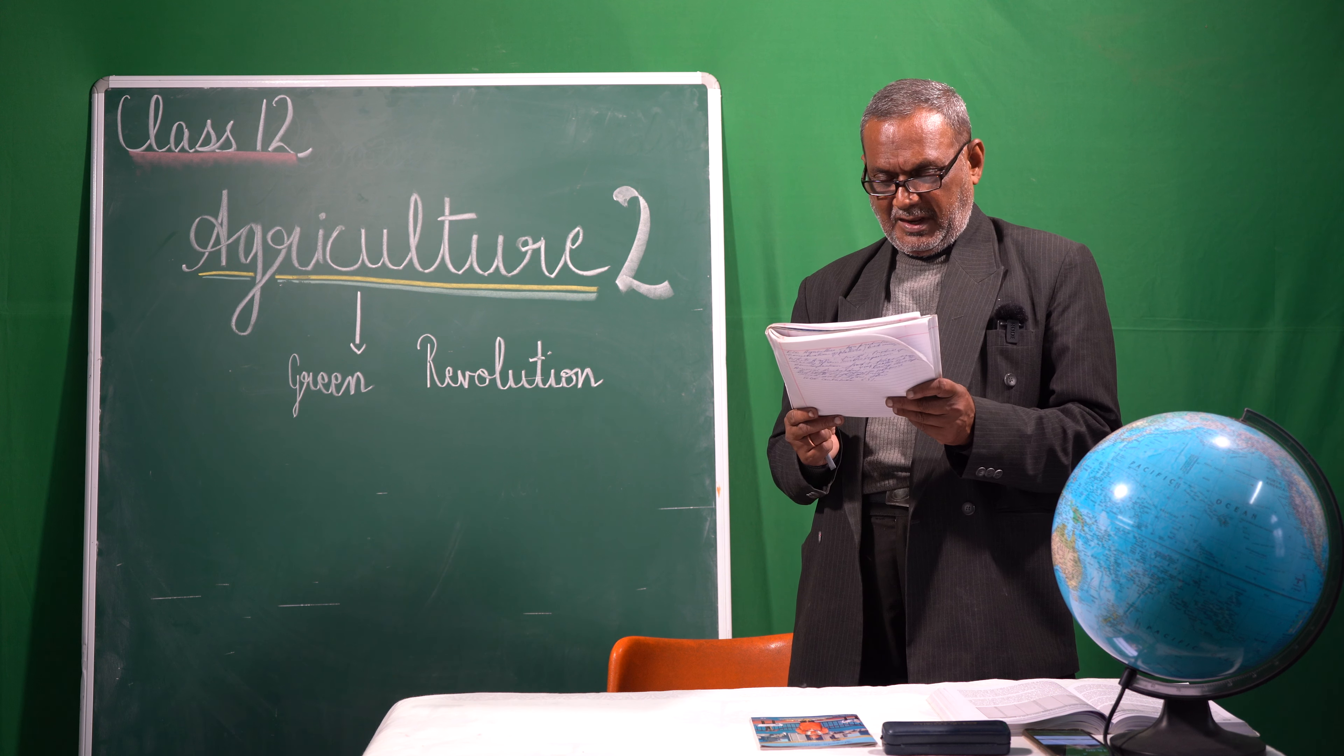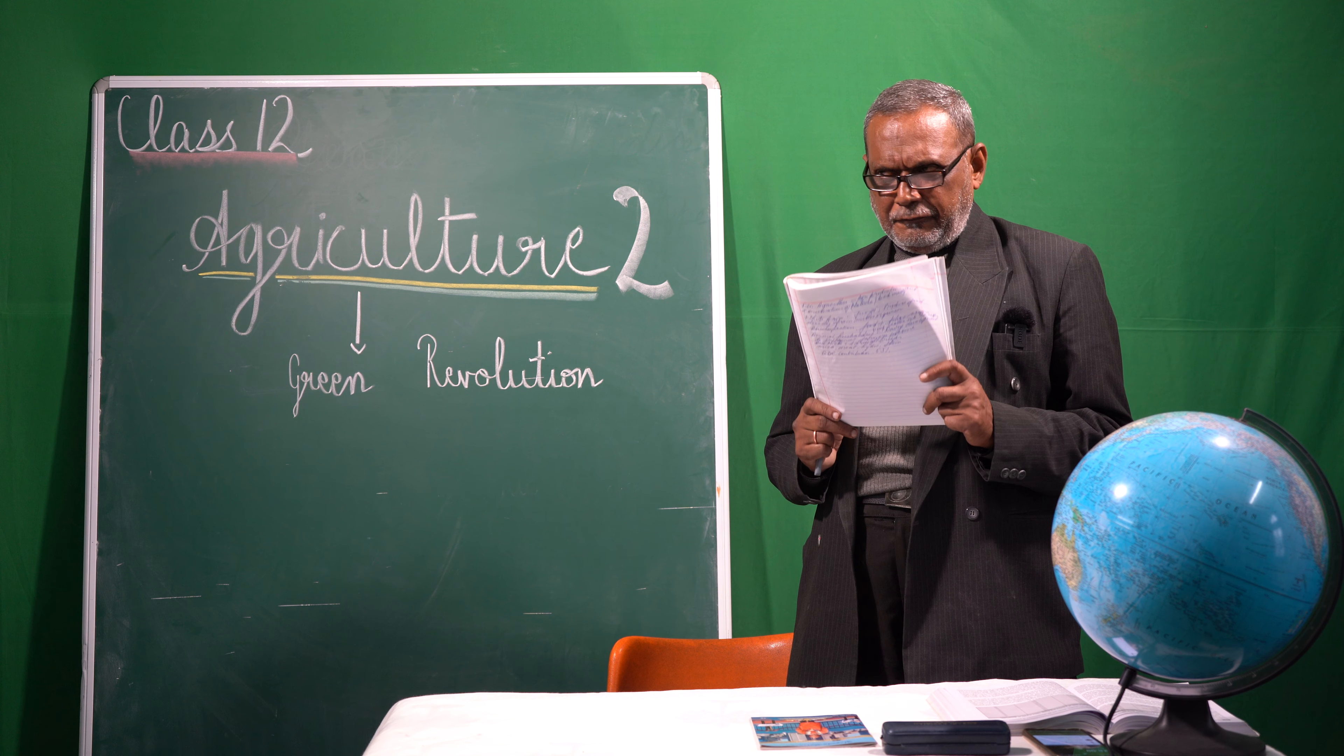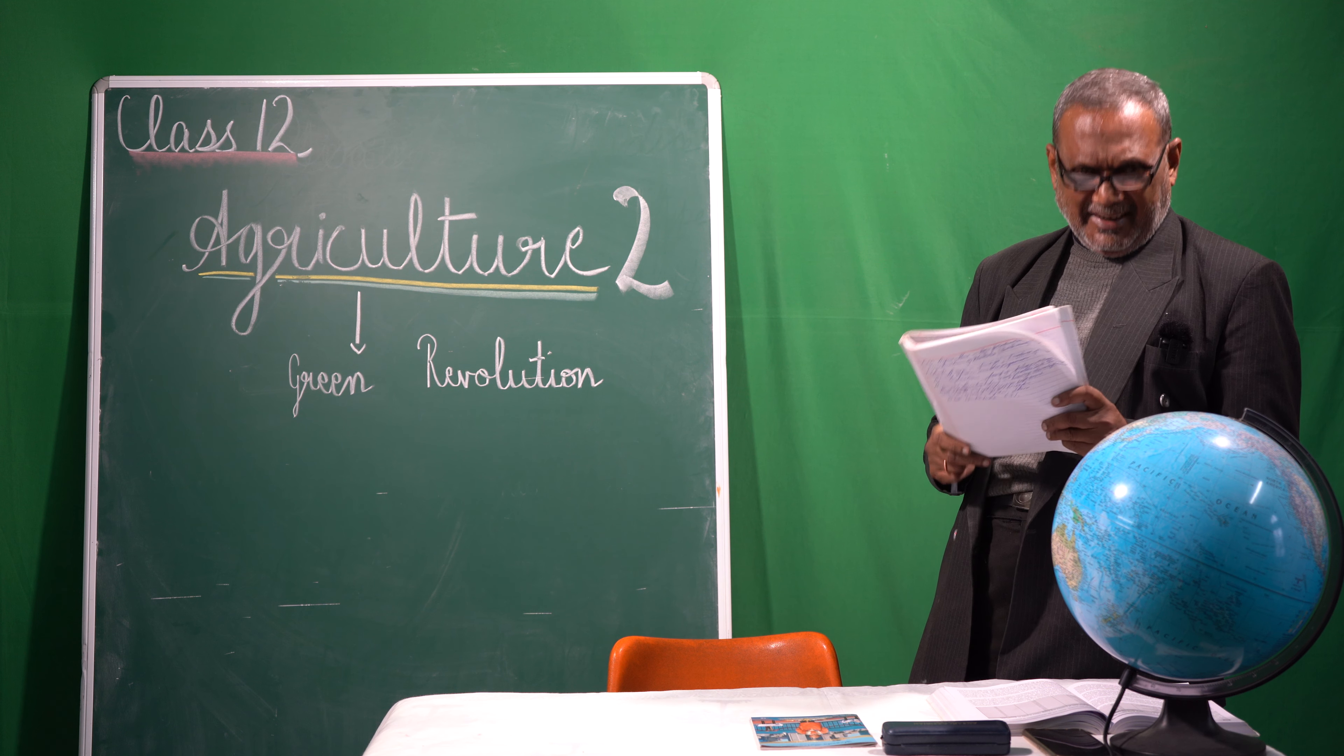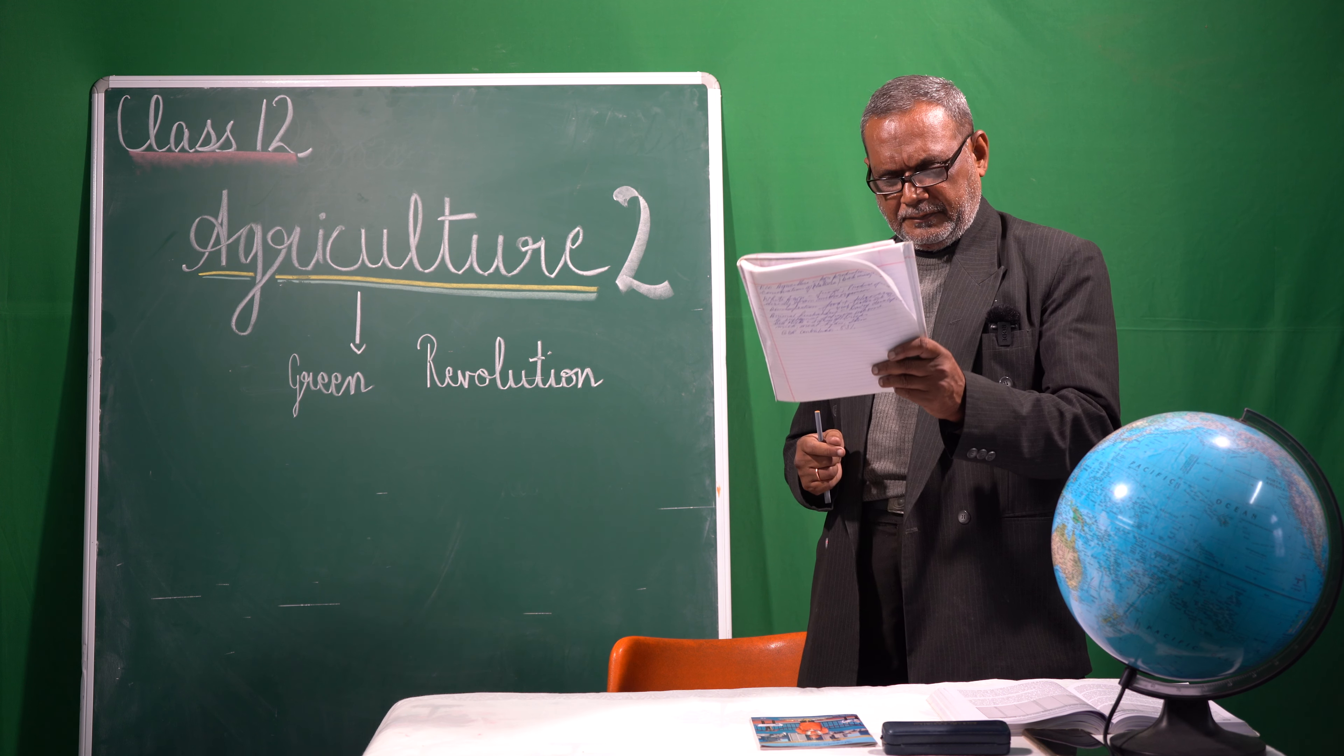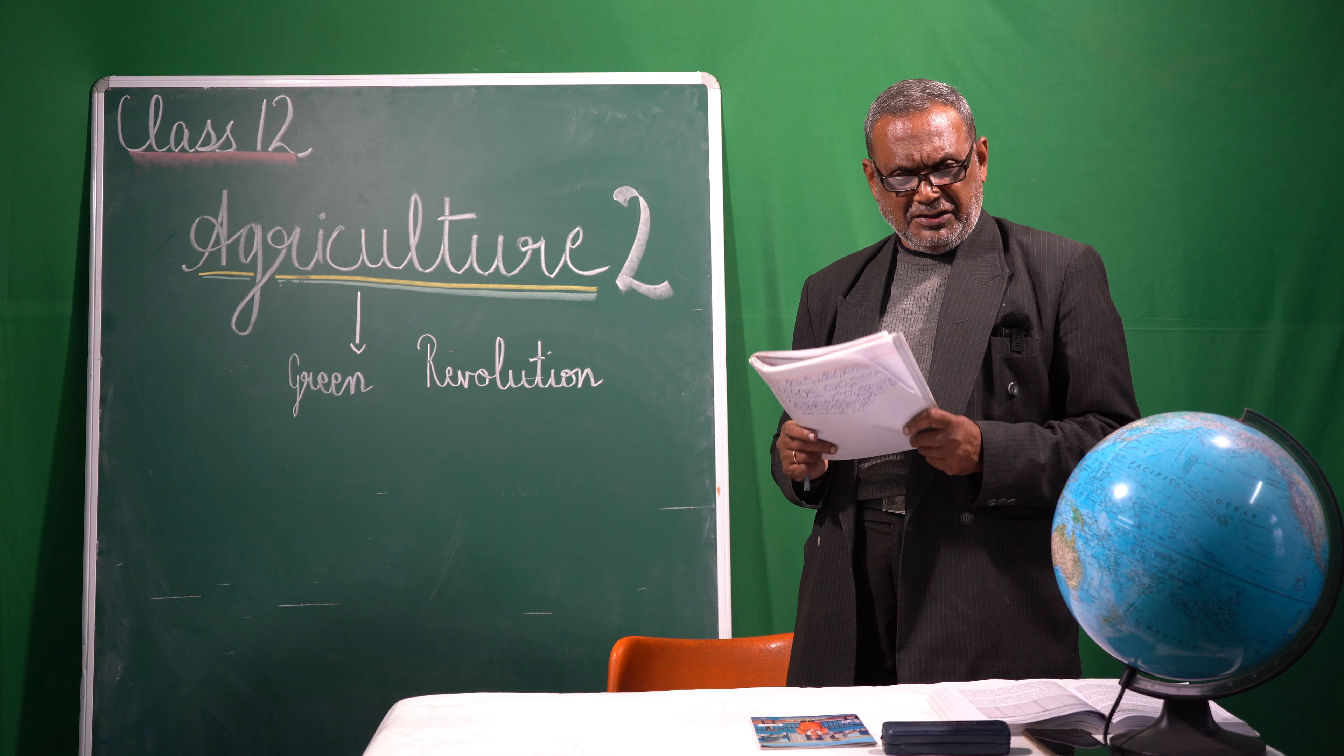As a result, a lot of thought and research was done to start the second green revolution in our country. What were the strategies of the second green revolution? The first was the government wanted to increase the irrigation and use micro irrigation.